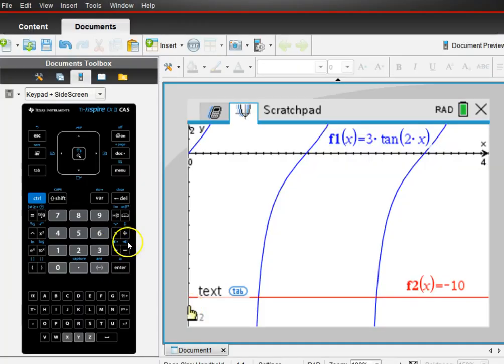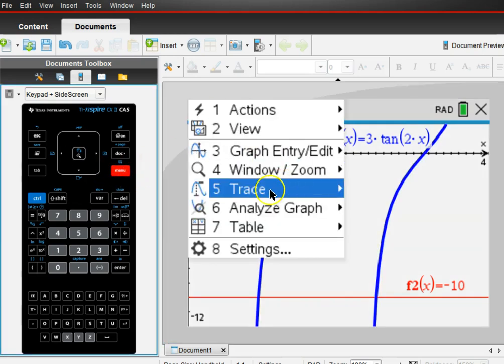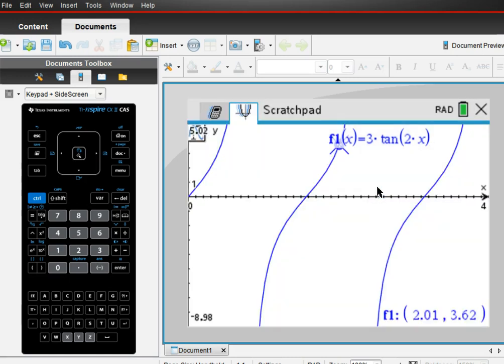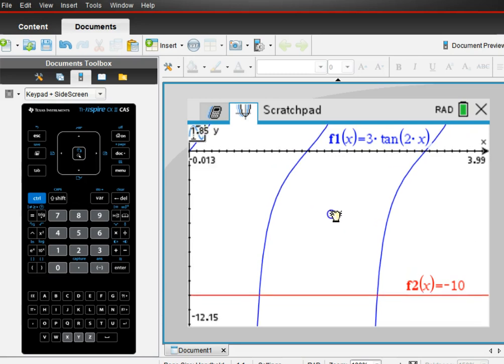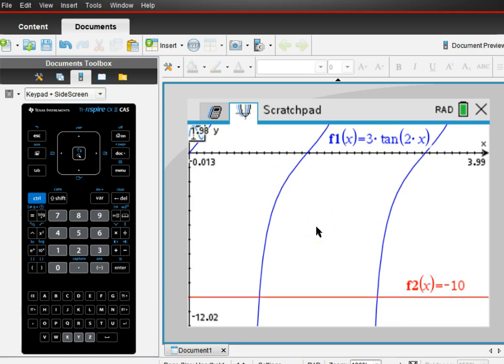Now if I was actually tracing this on the graph, I could type in a value. I could type in my y values or x values and see if my y value equals negative 10. Just to show you this on the calculator, I typed in the right-hand side of the equation, 3 tangent of 2x, and the left-hand side of the equation, y equals negative 10. I set my window settings from 0 to 4 for x and from negative 12 to 2 for y so that I could see all the features of the graph that I wanted to see. Then if I go to menu, trace, graph trace, then I can just type in my solutions.